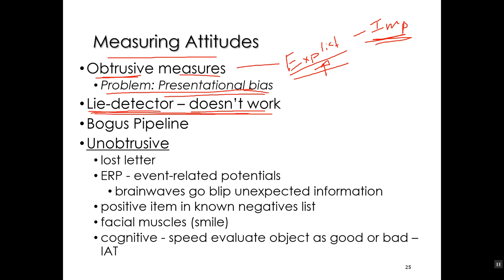Polygraph — 'poly' means several graphs. It's measuring several biological, physiological measures from you: heart rate, respiration rate, galvanic skin response — the electrical conductivity of your skin. The amount you're sweating changes that. All of those things measure your physiological state, not whether or not you're lying. If you're nervous or upset about something else, the lie detector will measure that you're lying, but you are not.